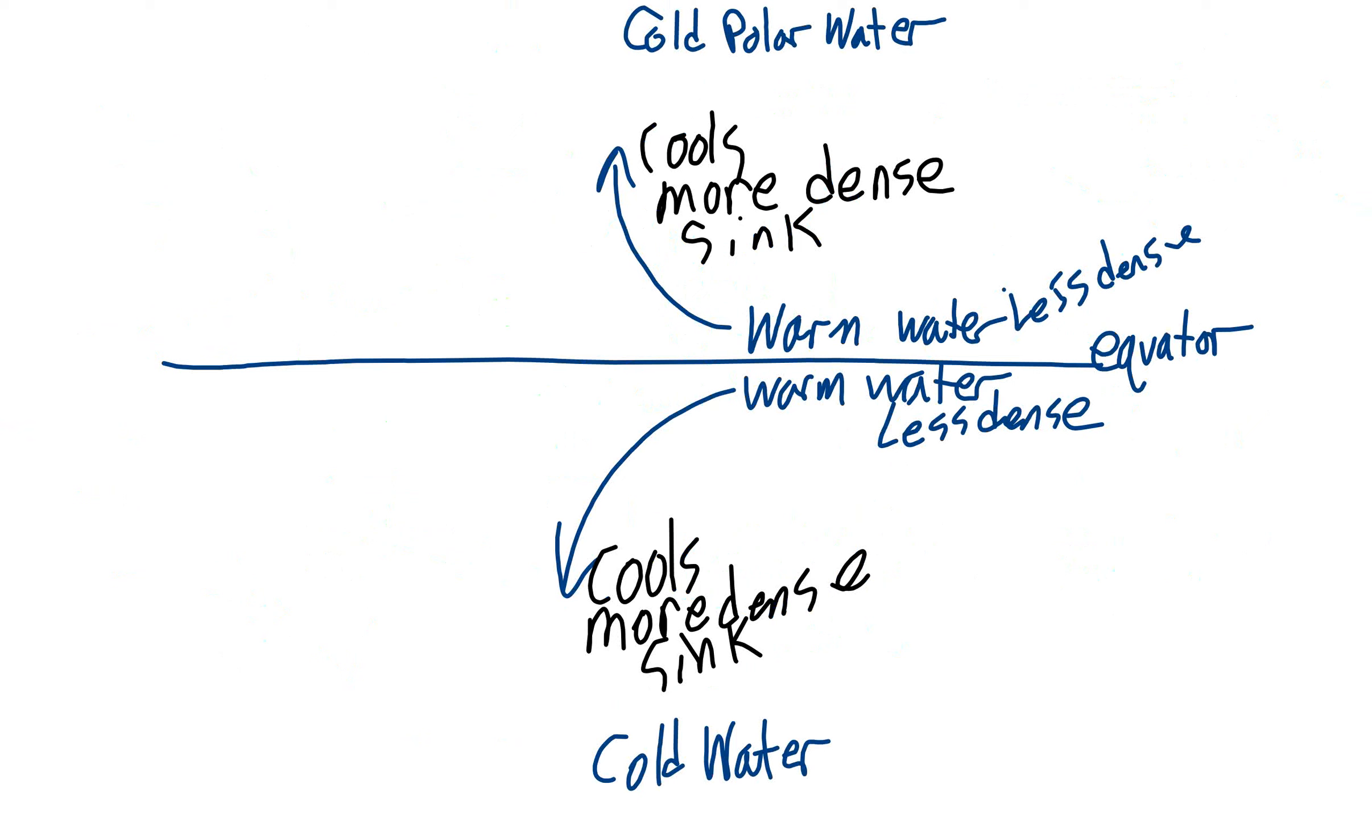All right. So if we have warm water down here at the equator, the equator is nice and warm all year long. That warm water, if it starts moving from the equator towards the pole, north or south, it's going to start cooling because it's getting away from the hottest part of the earth.